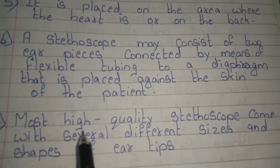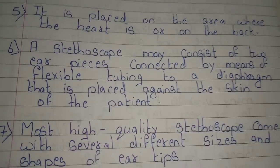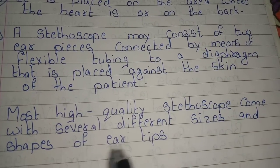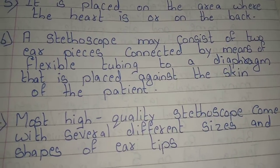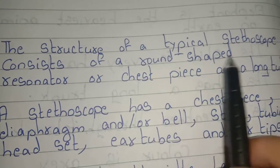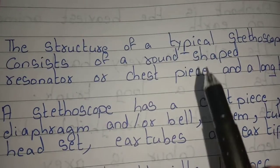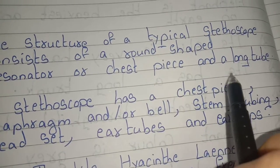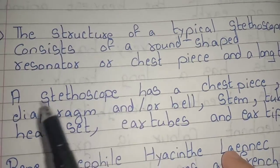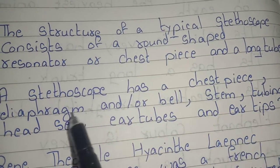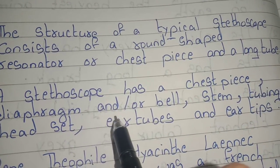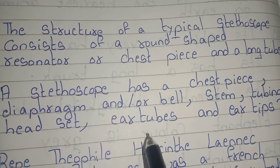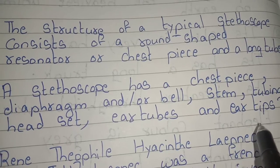Most high quality stethoscopes come with several different sizes and shapes of ear tips. The structure of a typical stethoscope consists of a round shaped resonator or chest piece and a long tube. A stethoscope has a chest piece, diaphragm and/or bell, stem, tubing, headset, ear tubes, and ear tips.